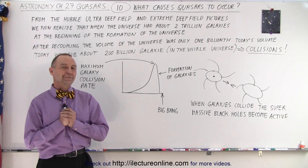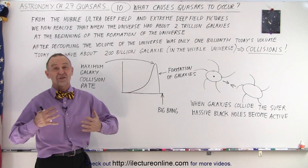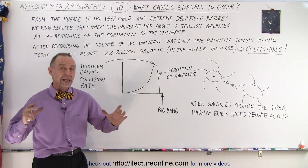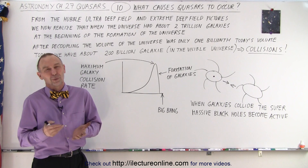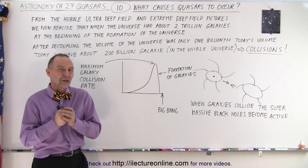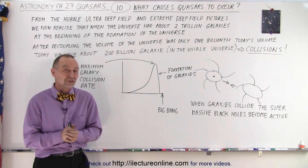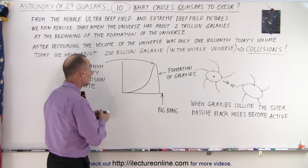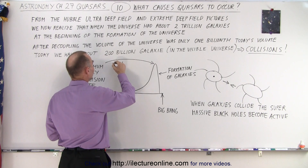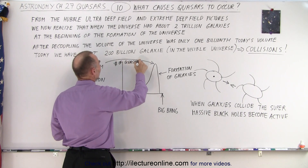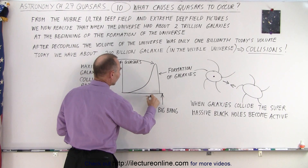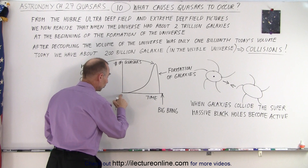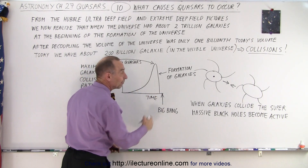Welcome to iLectronLine. What causes quasars to be quasars? We already know that it requires a supermassive black hole that is active. But then the question is, what makes those supermassive black holes active inside quasars? The key was this curve right here that we showed you last time, where on the vertical axis is number of quasars, on the horizontal axis is time — from present back to the Big Bang at the very beginning.